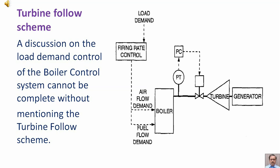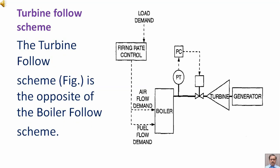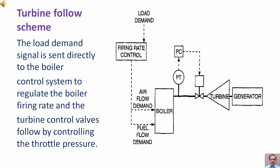A discussion on the load demand control of the boiler control system cannot be complete without mentioning the turbine follow scheme. The turbine follow scheme is the opposite of the boiler follow scheme. The load demand signal is sent directly to the boiler control system to regulate the boiler firing rate, and the turbine control valves follow by controlling the throttle pressure.